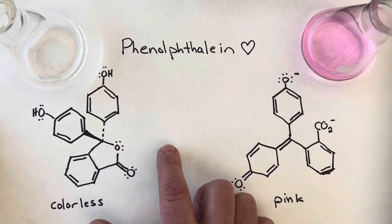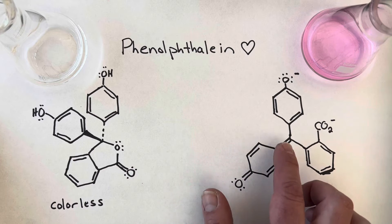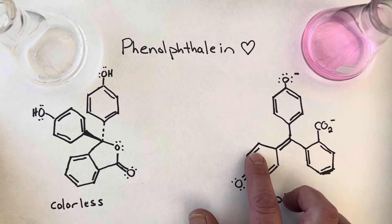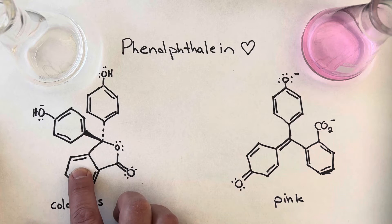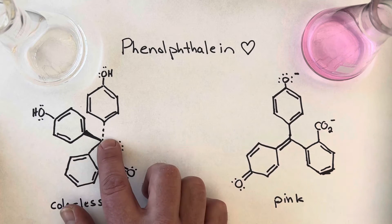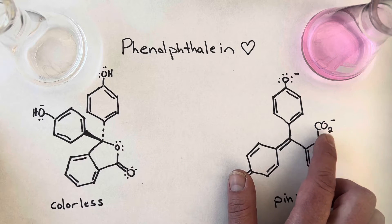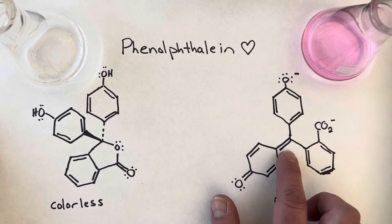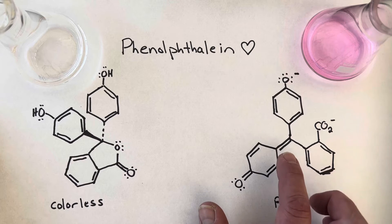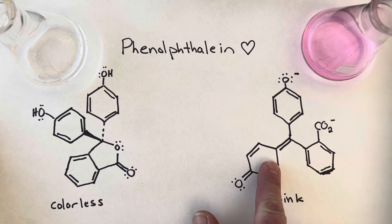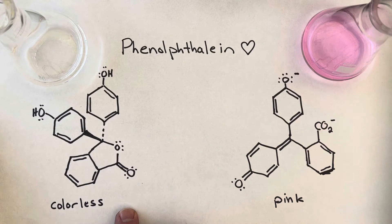As the solution becomes more basic and there's less hydrogen available, a lot of the hydrogens pop off and the whole structure shifts, including the double bonds. This area of the molecule looks much different from this area. Also, this little ring got destroyed, and now the carbon and the two oxygens are just off by themselves. What this does is allow the molecule to interact with photons of light and absorb and reflect different frequencies, so we see the color pink, whereas before we just see a colorless sample.